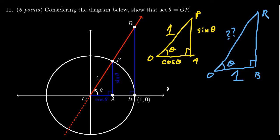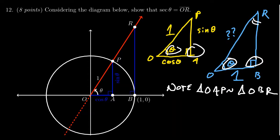First note that triangle OAP is similar to triangle OBR. They both have angle theta and a right angle. Since all angles sum to 180 degrees, the remaining angles must be the same. Therefore, the triangles are similar.